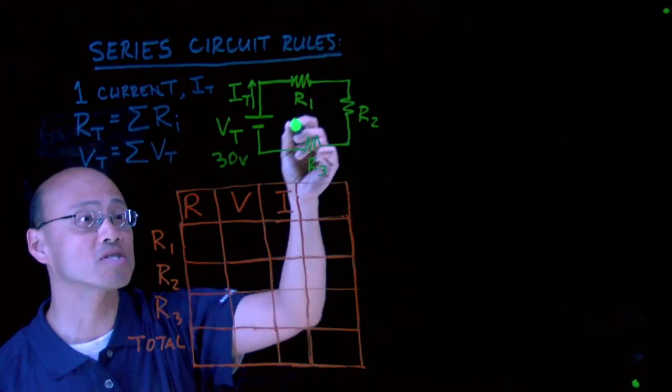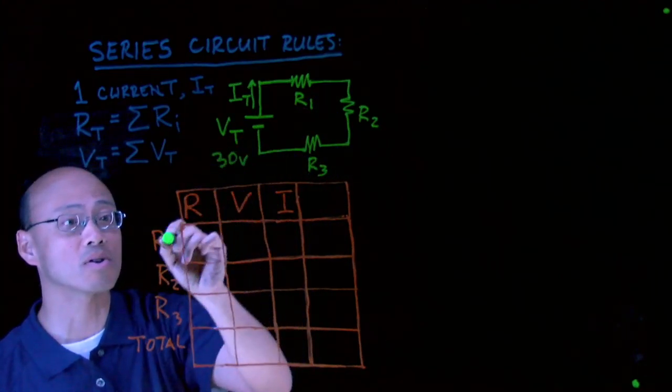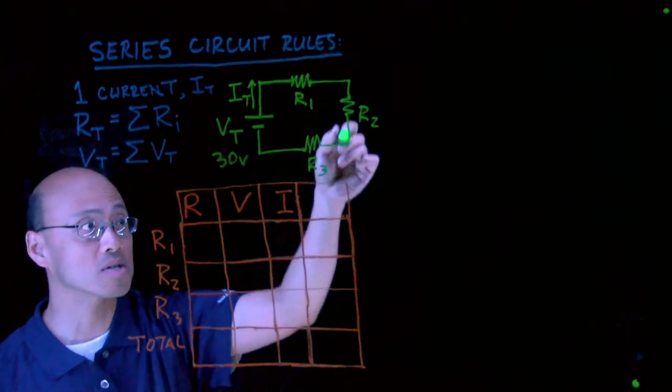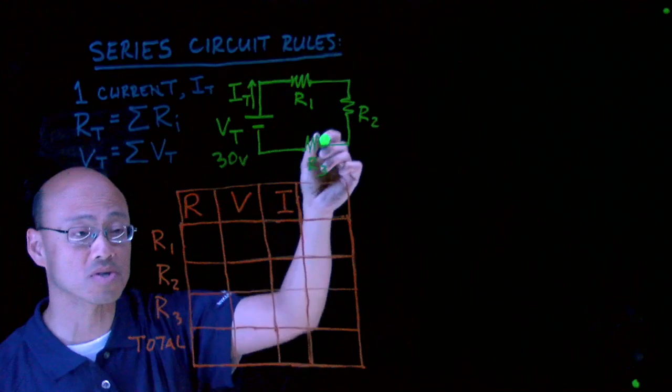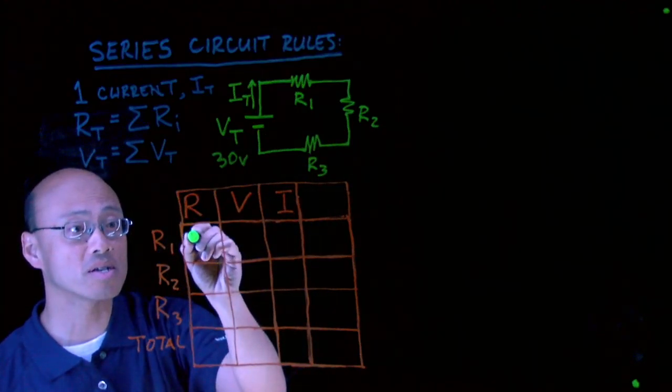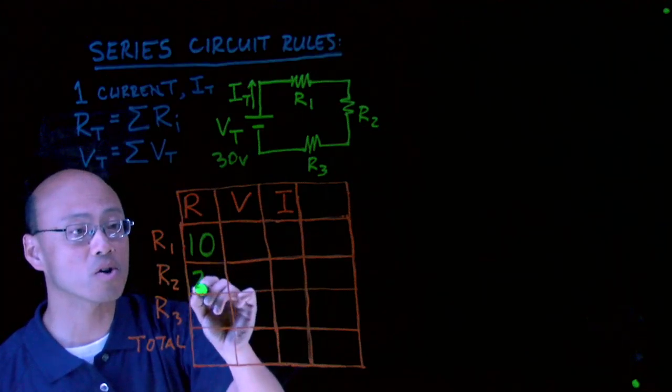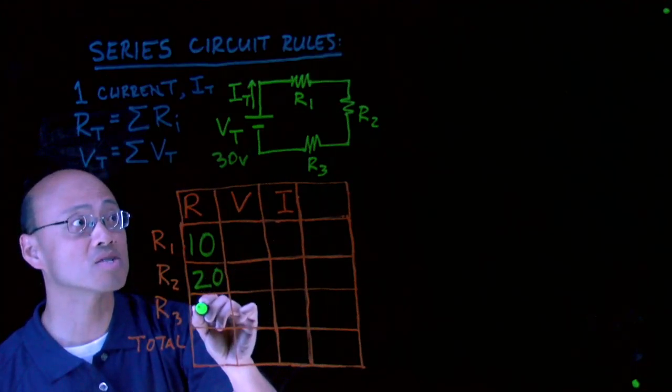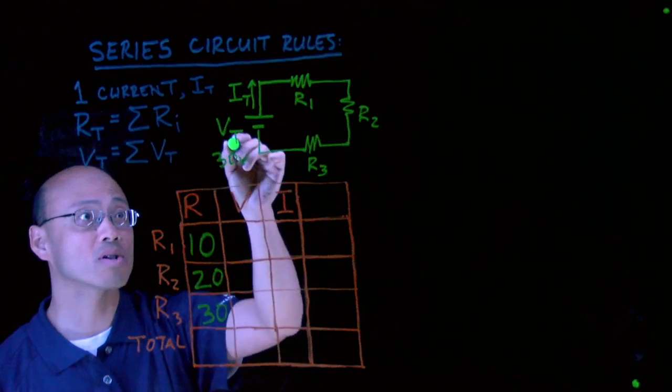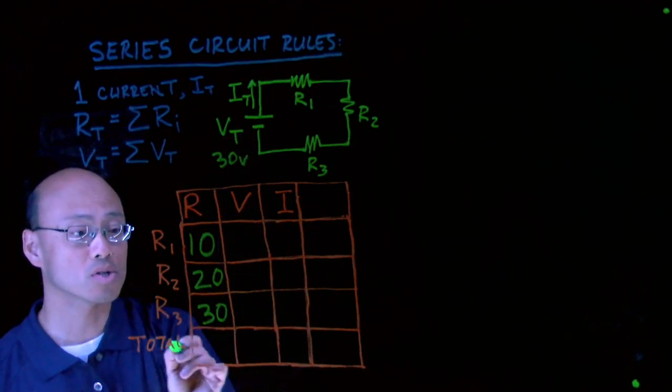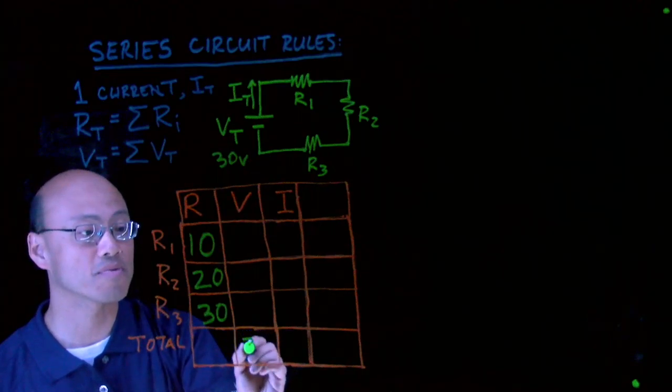Let's say we know that R1 is 10 ohms. If R1 is 10 ohms, on the table I could go to R1 - each row corresponds to a component or a resistor in the circuit - and I could say that R1 is 10 ohms. Let's say R2 is 20 ohms and R3 is 30 ohms. We know that our total voltage is 30 volts, so voltage column, total row, 30 volts.